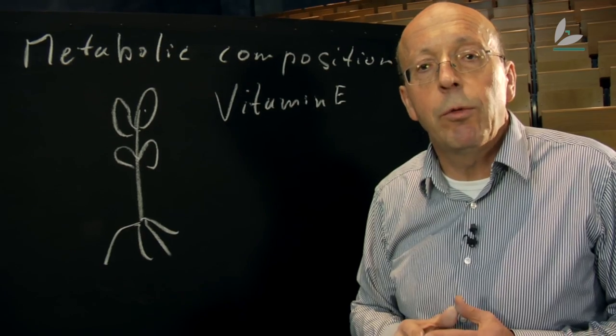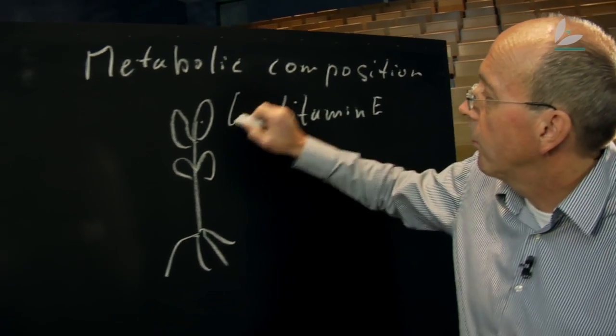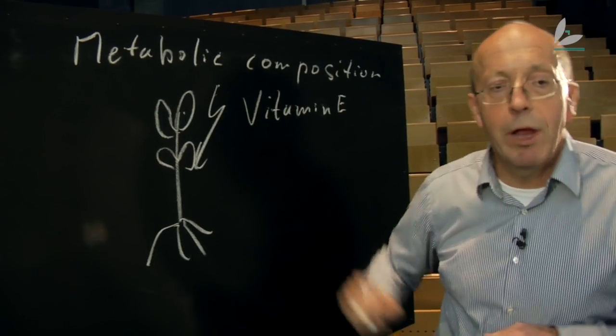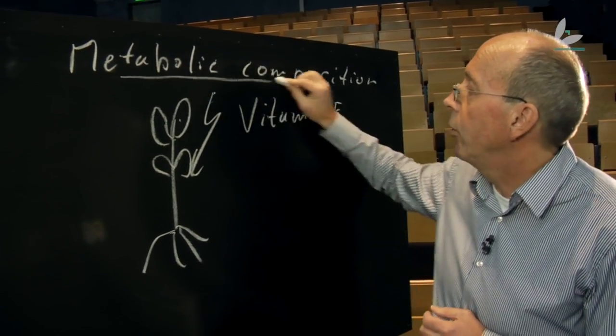Are there other possibilities for using metabolic composition? Yes, there are. For example, when plants are exposed to changing environments such as drought or salt stress, they change their metabolic composition.